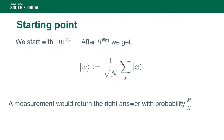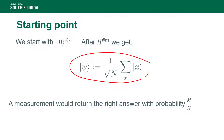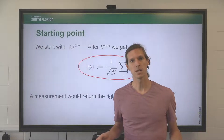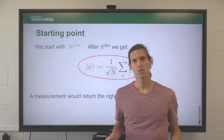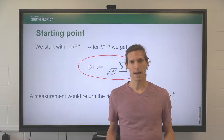The starting point is applying the Hadamard gate to the zero state, which produces the uniform superposition of all possible answers to the problem. So we would get a marked element just by measuring this state with probability m over n.